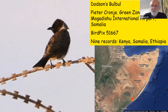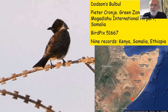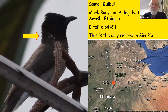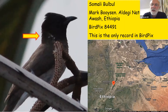I was amazed to find we have photos of every species in BirdPix. Peter Crony was doing police training in Somalia and lived in the camp in the Green Zone alongside Mogadishu International Airport. He got into trouble taking pictures of birds on the perimeter fence — nine records in total from Kenya, Somalia, and Ethiopia. The Somali Bulbul has a few whitish feathers on its neck; this Ethiopian record is the only record of that species in the Virtual Museum.